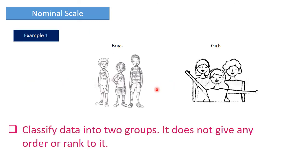Let us see one example of nominal scale. I can classify a group of students into boys and girls. It doesn't mean that girls are better than boys or boys are better than girls — it just classifies them into two groups. It does not give any order or rank to these two categories.